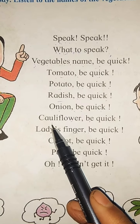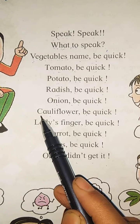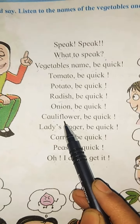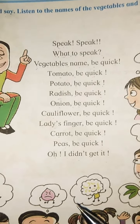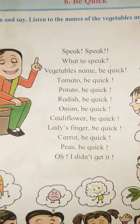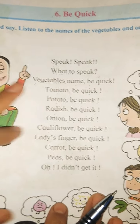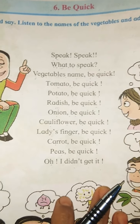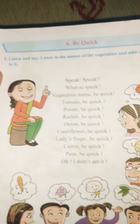Baad me kya hai? Cauliflower. Cauliflower ka spelling kya hai? C-A-U-L-I-F-L-O-W-E-R. Is poem me kya matlab hai? Aap color color ka jo game khailte na — color color which color? Us tarah se speak speak, what to speak? Vegetable's name be quick. Aap vegetable ki jagah fruits ka bhi naam de sakte ho. Is tarah se poem ko game ki tarah khelna hai. OK?